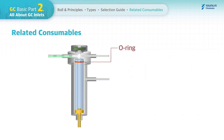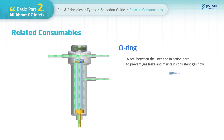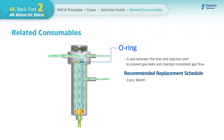An inlet O-ring seals between the liner and the injection port of the GC, preventing gas leaks and maintaining consistent gas flow. This needs to be replaced periodically before it gets damaged or worn out.